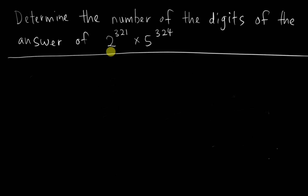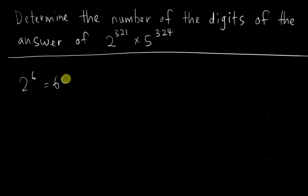In order to get the number of digits in terms of 2 to the power of something, we cannot easily tell. For example, 2 to the power of 6 doesn't mean it has 6 digits — 2 to the power of 6 is 64, which only has 2 digits. The same applies to 5 to the power of something; it's very hard to estimate the number of digits when working with bases 2 and 5.